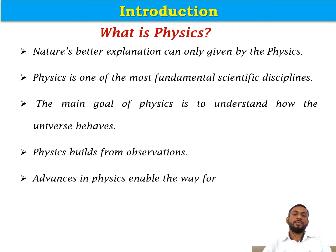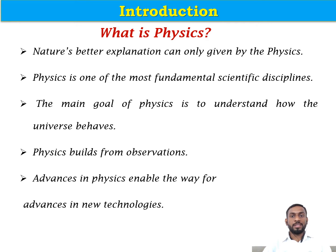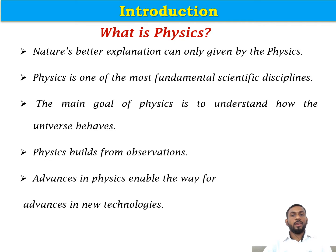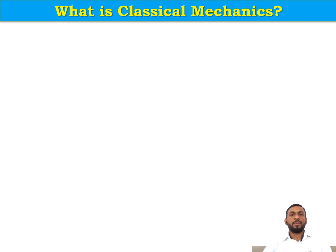Advances in physics enable advances in new technology. Whatever new technology we see today is the effect of physics — basically, inventions in physics. For example, the invention of the transistor tremendously changed the electronics area. In today's time, if we look at every part of our day-to-day household systems, we find that electronics has been tremendously changed because of the transistor. There are numerous examples where physics has changed the way of life.